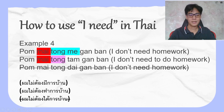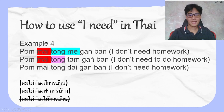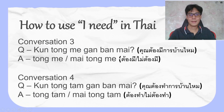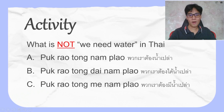ผมไม่ต้องทำการบ้าน. Don't say 'I don't have a house' — we don't use that form with the negative. It's not 'we need water' used that way in Thai.